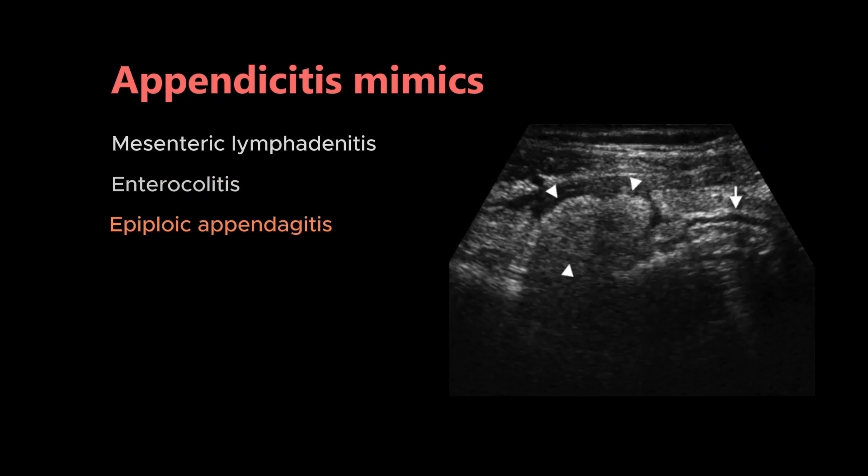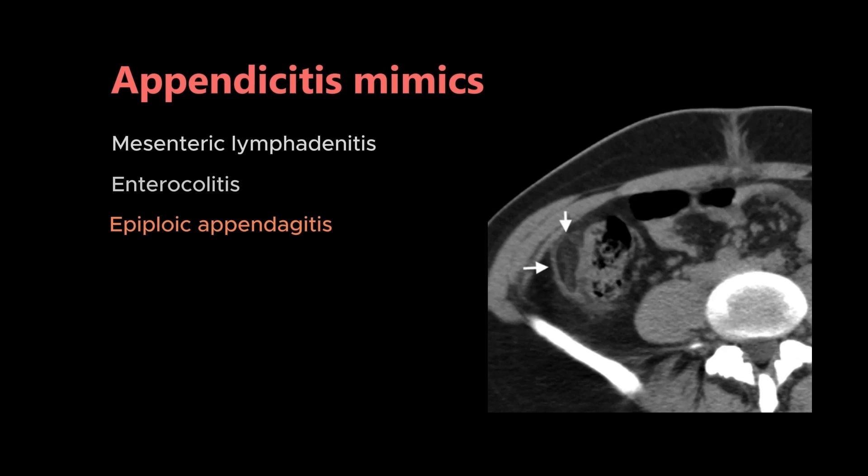Epiploic appendagitis is another condition in which you can see a homogeneous mass-like appearance of the fat adjacent to the colon. On CT it shows a ring-like hyperdensity adjacent to the colon.